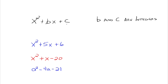The c part here has a name — it's called the constant term. On the first example, x squared plus 5x plus 6, the constant term is 6. The second one, the constant term is negative 20, and the last one, the constant term is negative 21. I want to make sure we understand what the constant term is, because I'm going to refer to it in just a few moments.